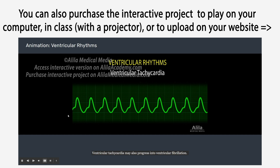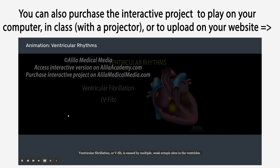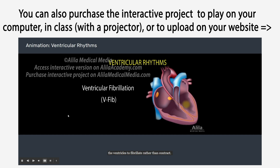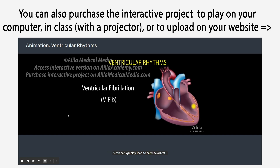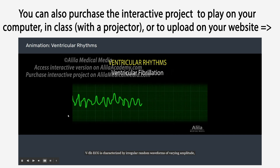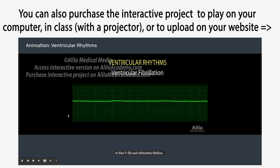Ventricular tachycardia may also progress into ventricular fibrillation. Ventricular fibrillation, or V-fib, is caused by multiple, weak ectopic sites in the ventricles. These unsynchronized electrical signals cause the ventricles to fibrillate rather than contract. The heart pumps little or no blood, and V-fib can quickly lead to cardiac arrest. V-fib ECG is characterized by irregular random waveforms of varying amplitude with no identifiable P-wave, QRS complex, or T-wave. Amplitude decreases with time from initial coarse V-fib to fine V-fib, and ultimately flatline.